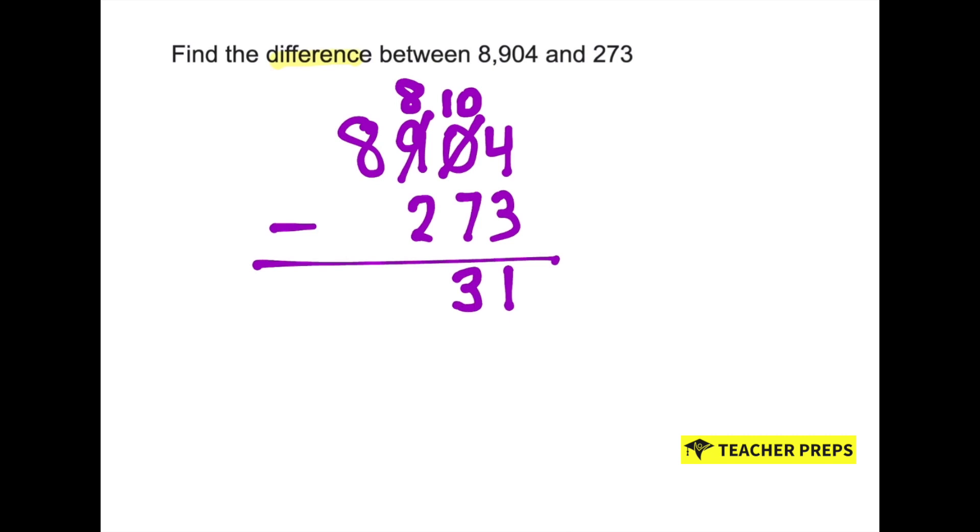Moving on, now we have 8 minus 2, which is 6, and then 8 minus nothing is 8. Our difference is 8,631.